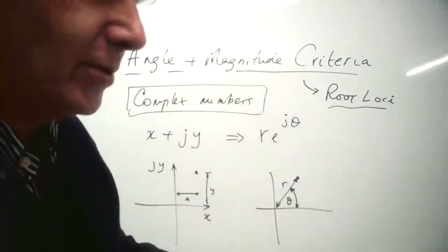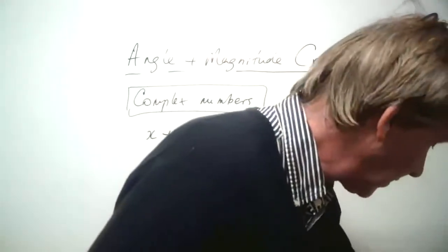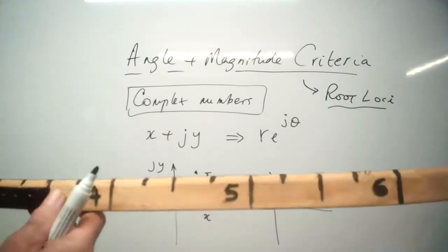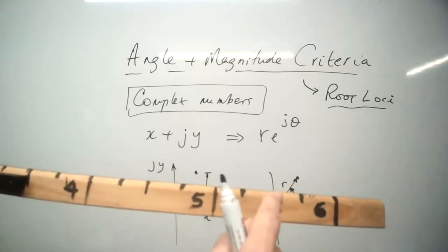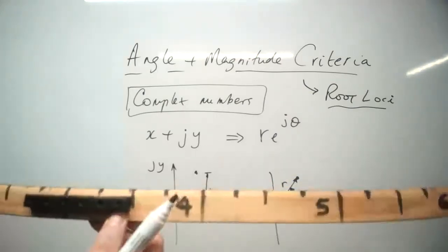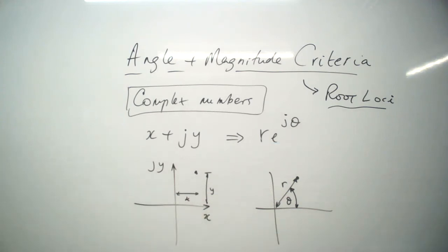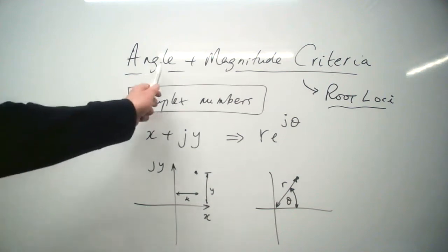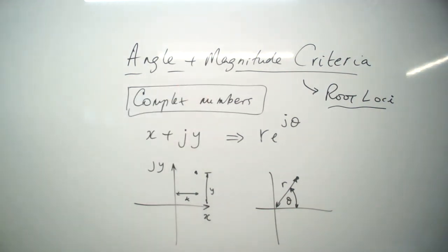Both the angle and magnitude criteria are quite easy to apply. All you really need is a protractor — my Man City protractor — and a ruler. There's an alternative: you can just have MATLAB, so you can do the same thing in MATLAB and avoid the ruler and protractor. Now I'm going to try and develop the angle and magnitude criteria first of all.